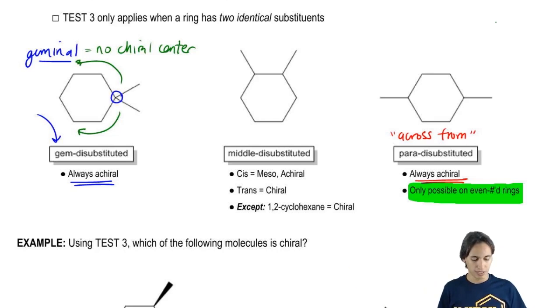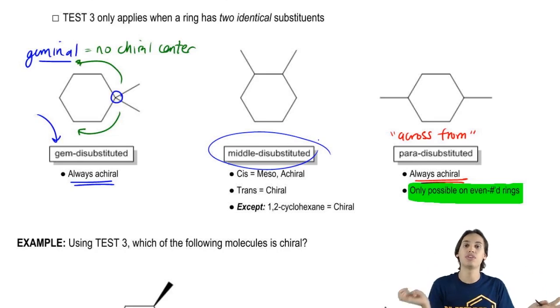What about in between? In between, we're calling that middle-disubstituted. That just means somewhere in the middle between gem and somewhere between para, basically somewhere in between zero degrees or 180 degrees, basically, if you're thinking of it as a circle. For these, it's actually going to depend where the groups are facing.